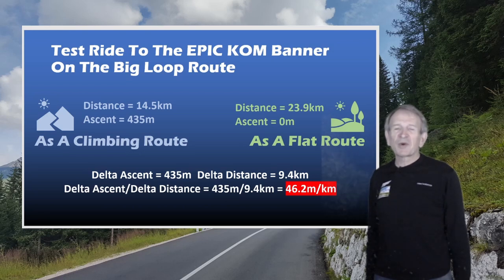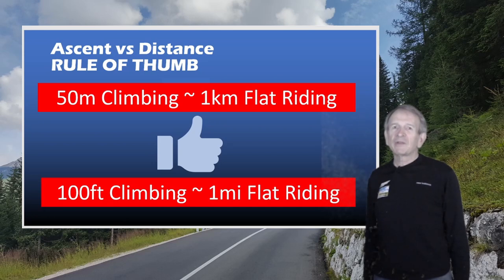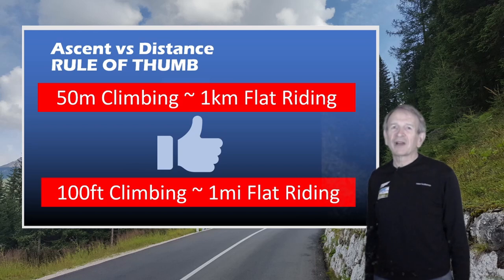That result is surprisingly close to the formula estimate of 49.2 meters per kilometer. So rounding the results, my rule of thumb is: 50 meters of climbing is roughly equivalent to one kilometer of flat riding. Or converting to imperial units, 100 feet of climbing is roughly equivalent to one mile of flat riding.